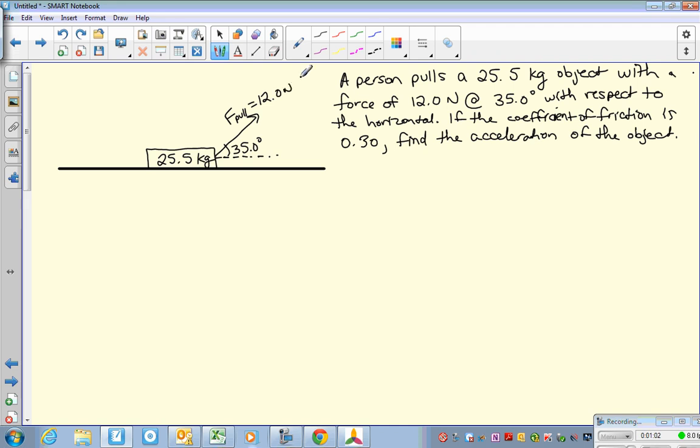So now we're trying to find—they also tell us the coefficient of friction is 0.30. So ask yourself, is this a static coefficient of friction or kinetic? Well, since we're trying to find the acceleration of the object, it's kind of clear that the object is moving. So therefore, they're telling us that our kinetic coefficient of friction is 0.30.